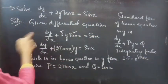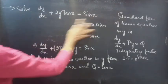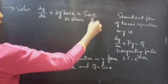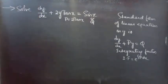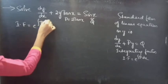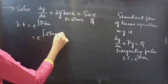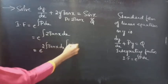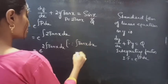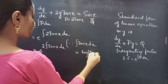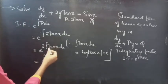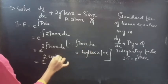Using this formula, we find the integrating factor for the given equation. Integrating factor equals e to the power of integral P dx, which equals e to the power of integral 2 tan x dx. Let's write the constant 2 outside the integral, giving e to the power of 2 integral tan x dx.